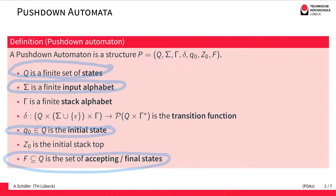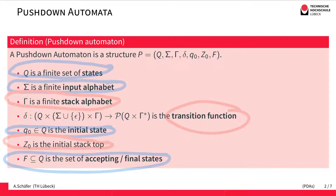However, there are also new parts. The new parts are of course the stack alphabet — we have a finite stack alphabet gamma — and we have some initial element that is on the stack. The transition function also looks a bit different from what we know from finite automata.